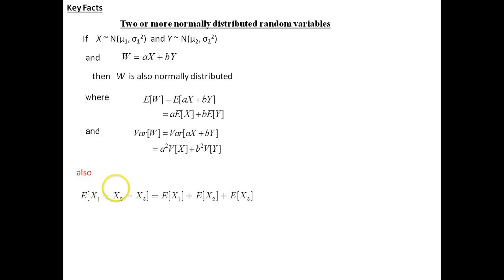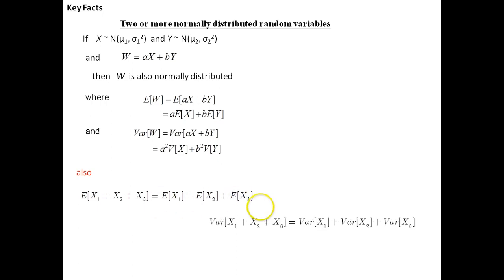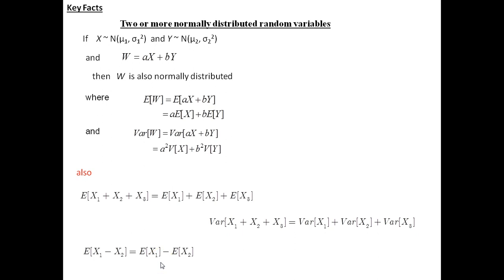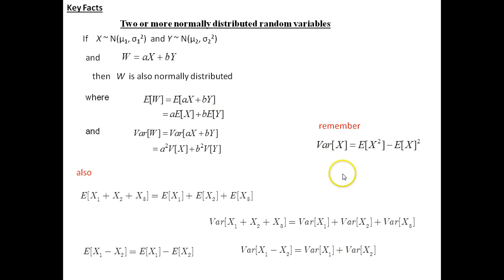Also, if we have three separate observations of X, then the mean would be the mean of each separate observation, and the variance would also be the variance of each individual observation. If we have the difference of two means, then the mean of the difference is the difference of the means, but the variance of a difference of two means would be the variance of one plus the variance of the other, because we square the coefficient. Remember also that the variance of X is the expected value of X squared minus the expected value of X, all squared.